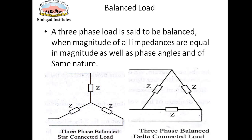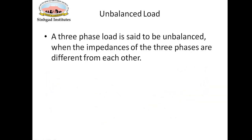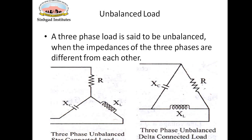This is an example of a delta-connected balanced load, where the impedance Z can be an RL circuit, RC circuit, RLC circuit, or purely R, purely C, or purely L — but all windings must have the same circuit. An unbalanced 3-phase load is one where the magnitude as well as phase angles are different from each other and they are of different nature; for example, one winding is resistive, another is inductive, and the third is capacitive.